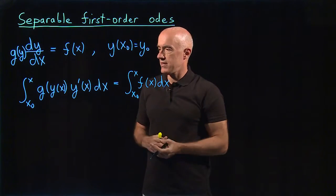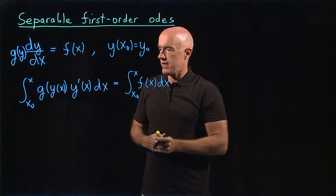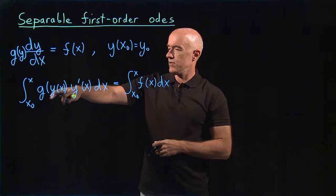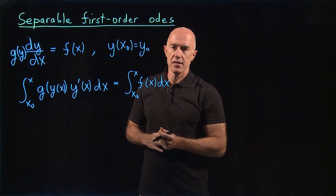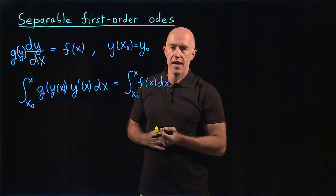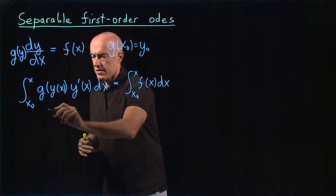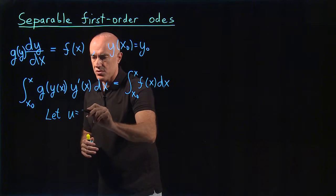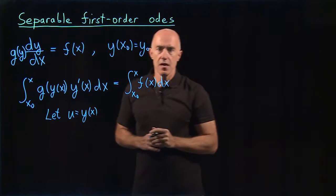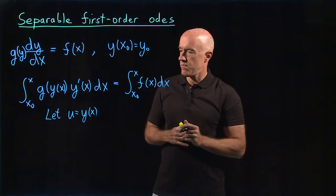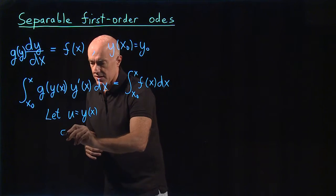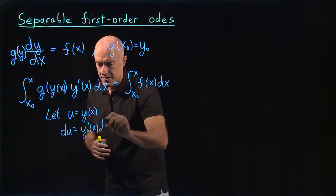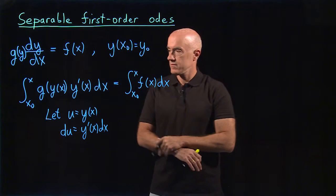So the equation is separable, and we integrate it. You can notice that the left-hand side of this equation looks like a typical substitution type of integration. So we can let u equals y of x. That's our substitution variable. And then du becomes y prime of x dx.